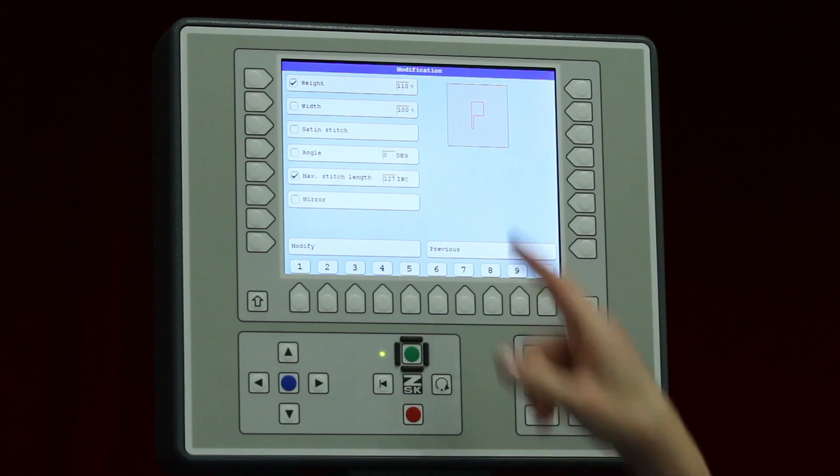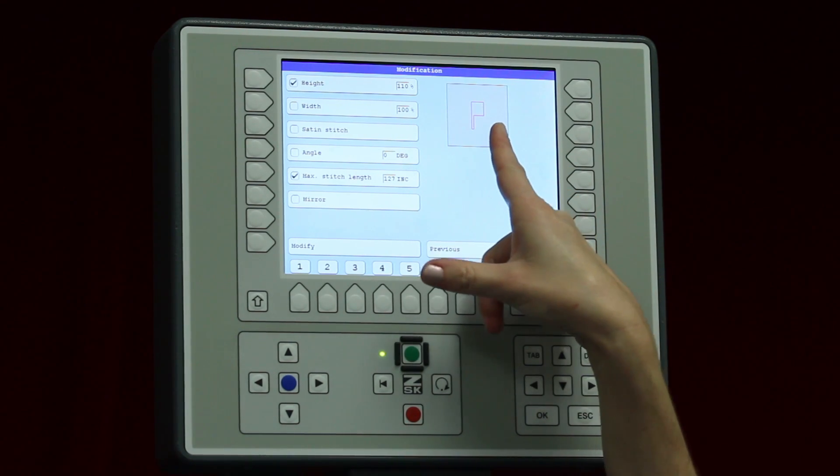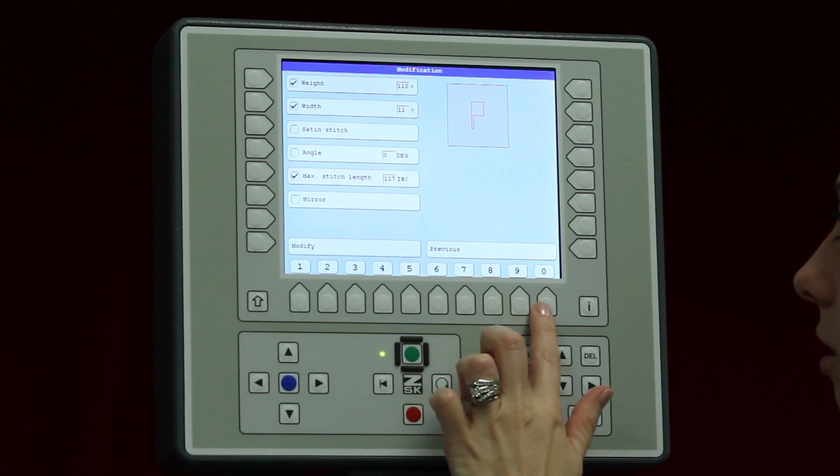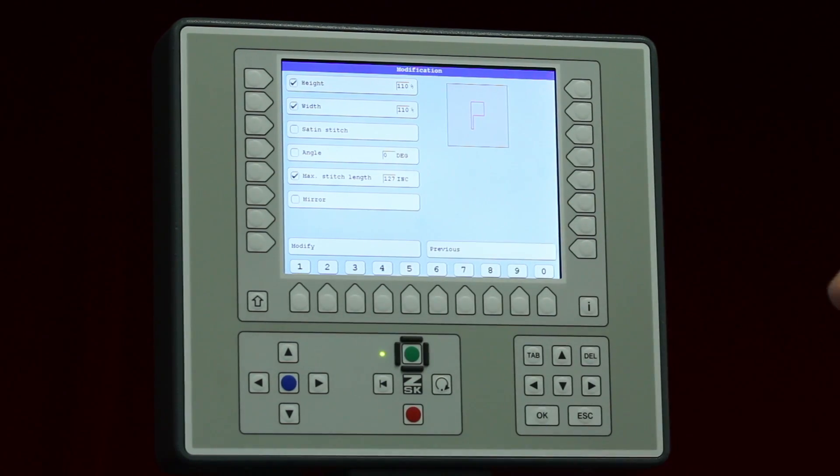You can see here my pink outline of the P that will show me the change. If I also want to do the width I would go ahead and press the width, type in 110. You can see it gets a little bit bigger as well.